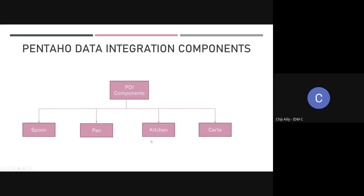Then we have Pentaho Kitchen. Kitchen is another command line process used to schedule different Pentaho jobs via Cron. So with Spoon you develop the ETLs — the transformations and job files. With Pan, you execute the transformations and job files from the command line. Kitchen is a utility that lets you schedule these transformations and jobs to automatically run from the command line.